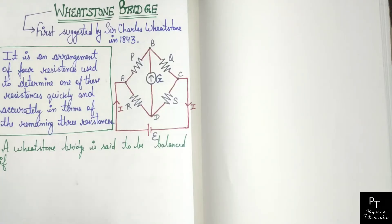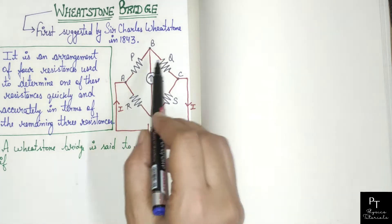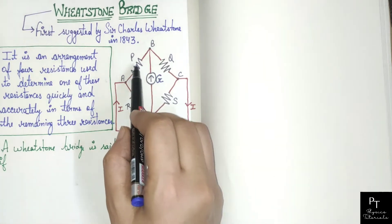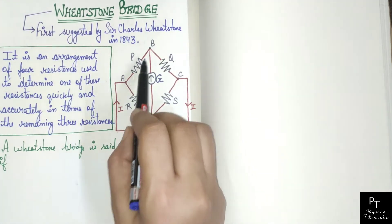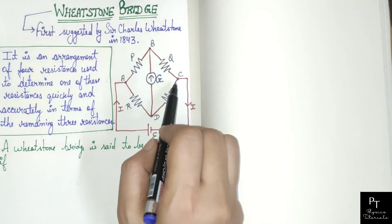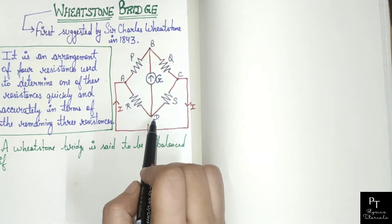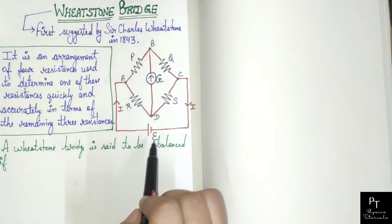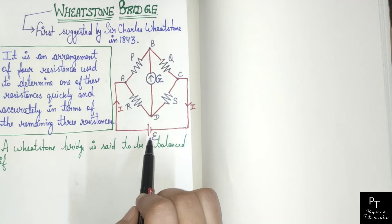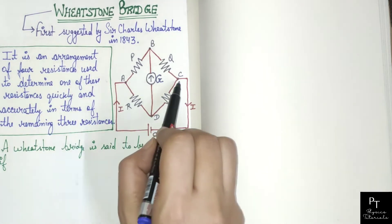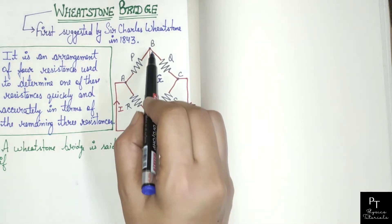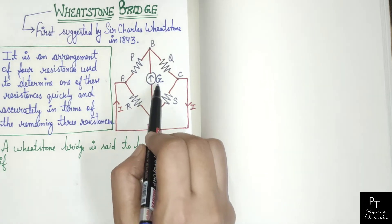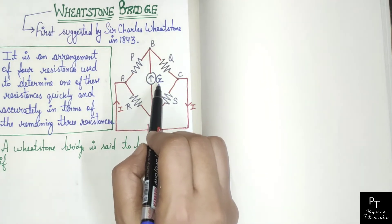Wheatstone Bridge has 4 resistances shown in this figure: P, Q, R and S, and they all form a quadrilateral with vertices A, B, C, D. A cell is connected between points A and C, and a Galvanometer is connected between points B and D. This represents the resistance of the Galvanometer.